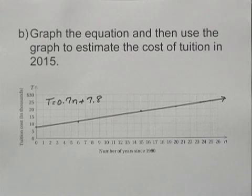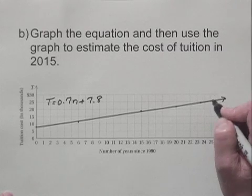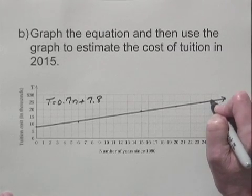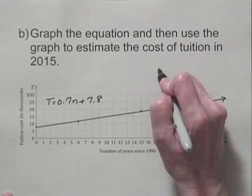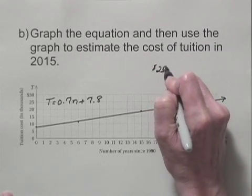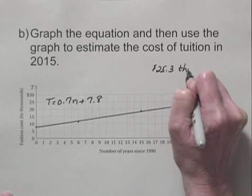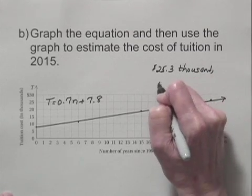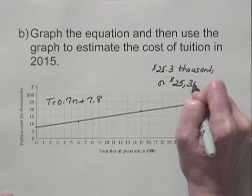This is the graph of T equals 0.7N plus 7.8. We're asked to estimate the cost of tuition in 2015. N is the number of years after 1990, so 2015 is 25 years after 1990. We locate 25 on the horizontal axis and go up to the graph. It looks like the value is just a little above 25, so we estimate it at 25.3 — meaning tuition in 2015 would be approximately $25,300.